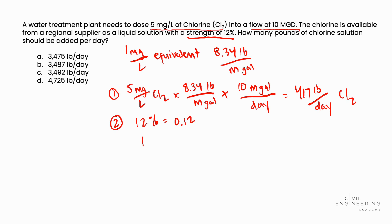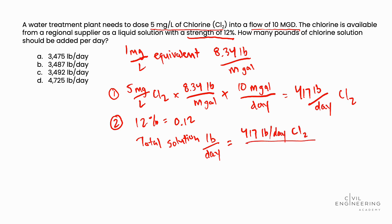So we'll take our total solution in pounds per day. That is going to be equal to: we said we needed 417 pounds per day of chlorine, and we'll divide that by the strength of the chlorine in the solution, which we're told is 12% — 0.12 in decimal form. We work this calculation out and determine that for our total solution in pounds per day, we need 3,475 pounds per day of the solution.